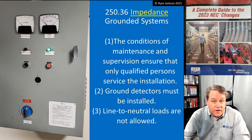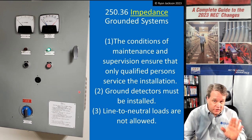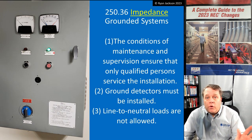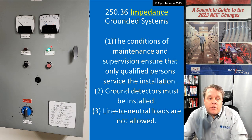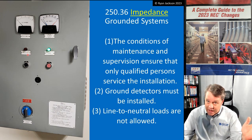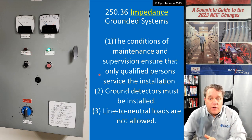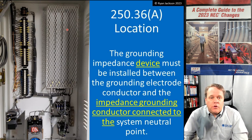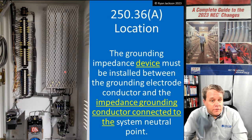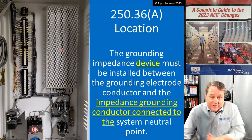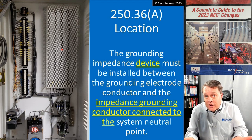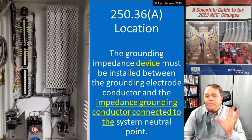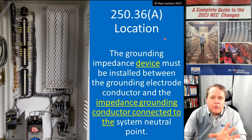Here is an example of an impedance grounded system - this is a small one. This is the ground detection system right here: the green light is on, everything is working perfectly. If that shuts off or turns red, and the light on the left turns on, that means we have a ground fault and we need to figure out what's going on. If I open this piece of equipment, it looks like this - that is the actual resistor. A slang term for this is a 'toaster,' because when you look at it it's just like a toaster - a toaster is just a big old resistor. Same thing here.